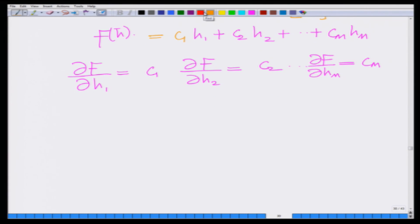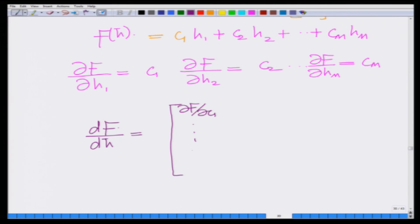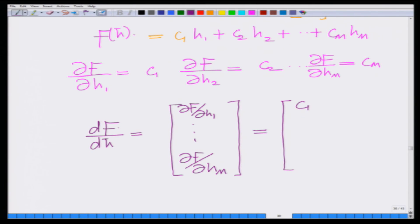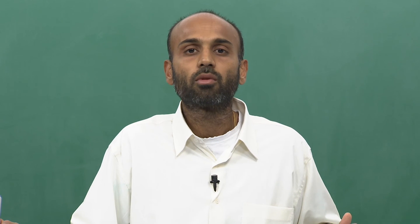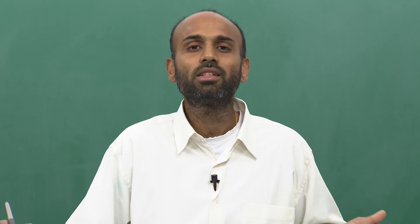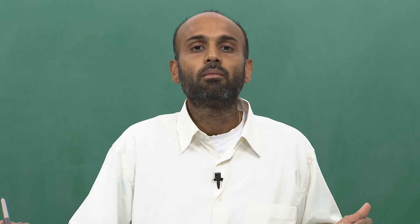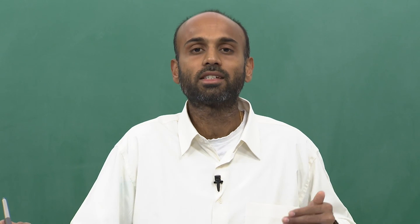Summarizing, the derivative of c̄ᵀh̄ with respect to h̄ is the vector c̄. This is a natural extension of the scalar derivative: just as the derivative of kx with respect to x is k, the derivative of c̄ᵀh̄ with respect to h̄ is c̄. Also, since c̄ᵀh̄ = h̄ᵀc̄, the derivative of h̄ᵀc̄ with respect to h̄ is also c̄.